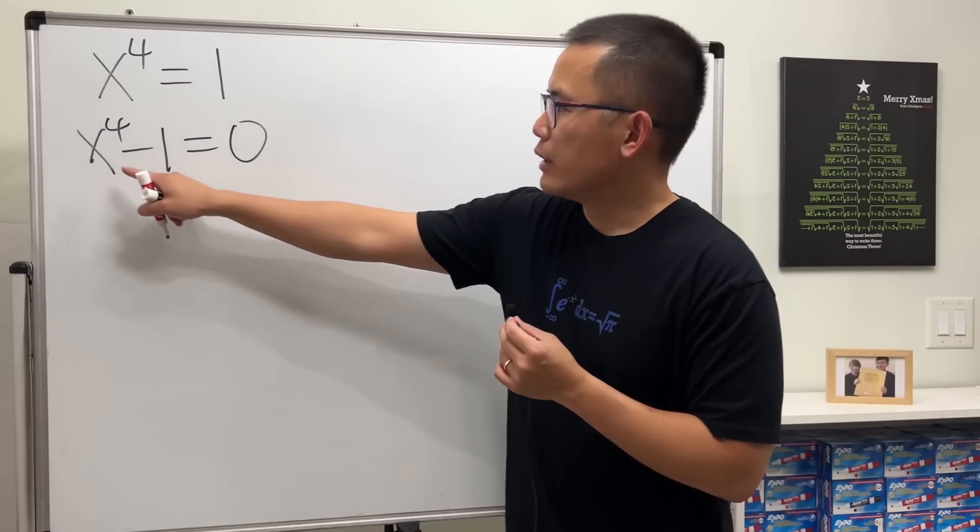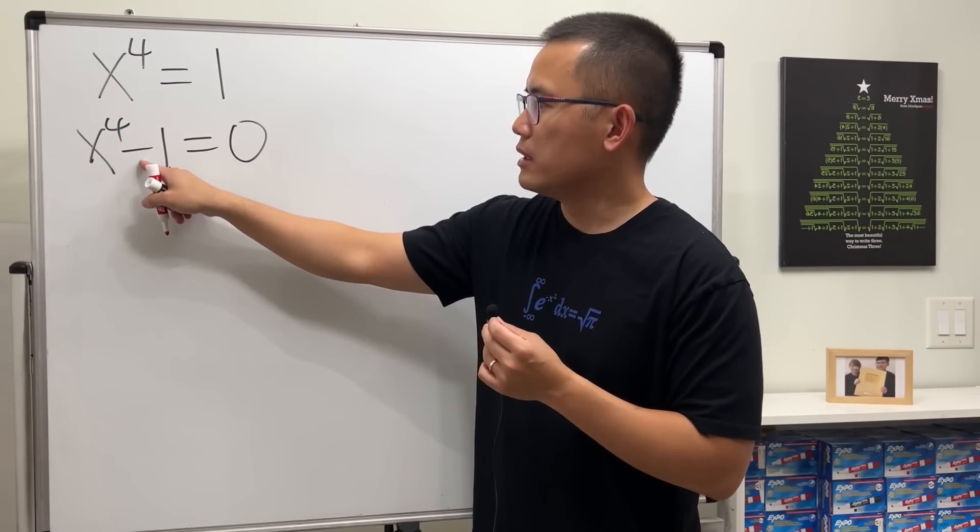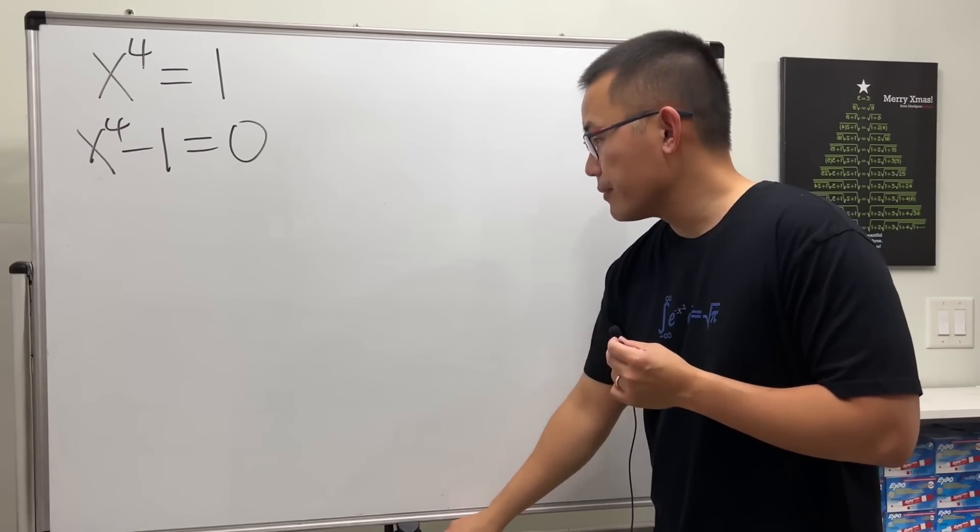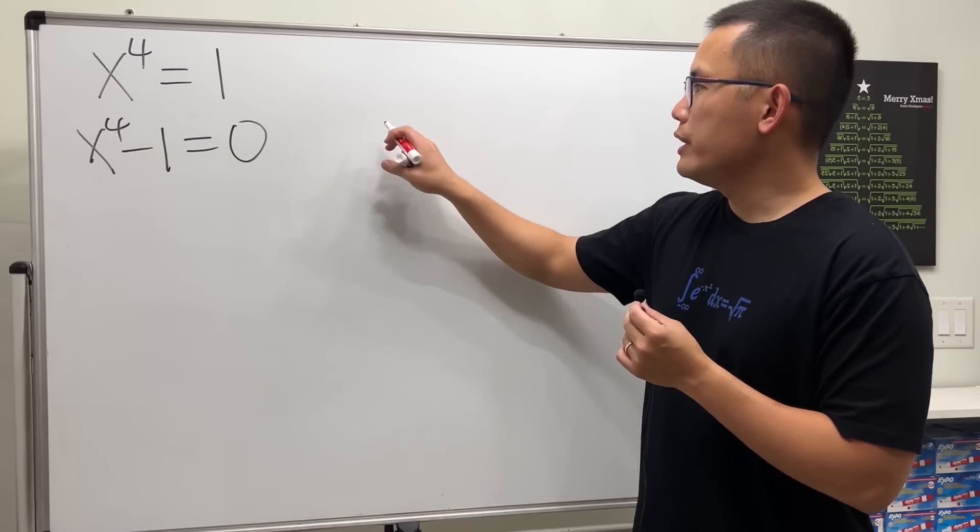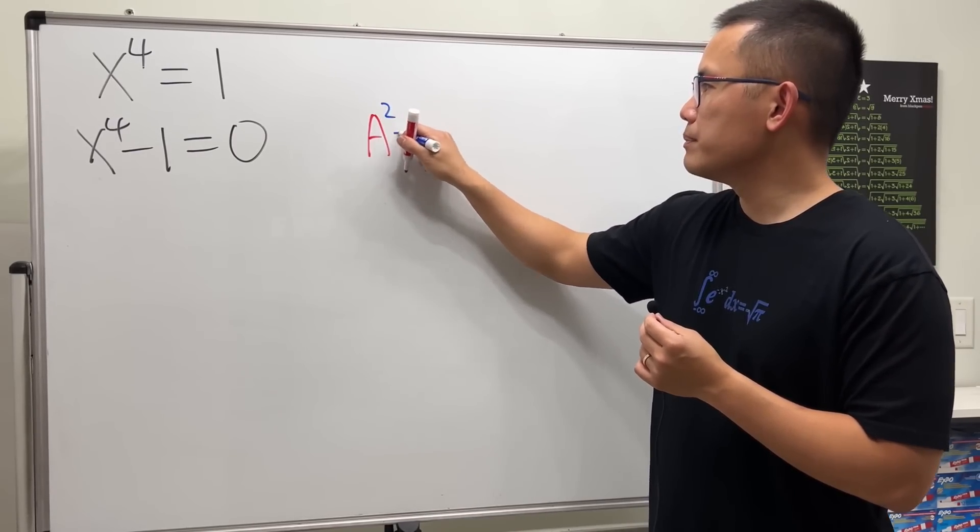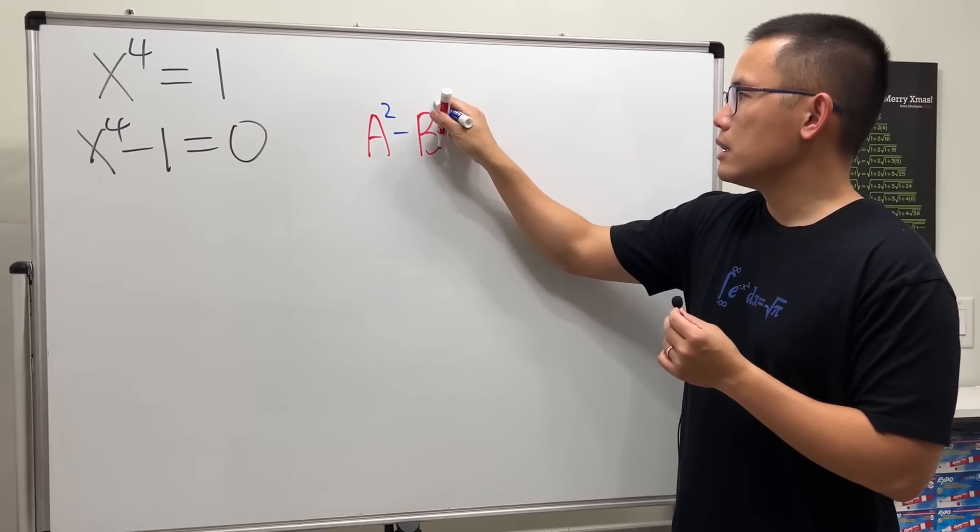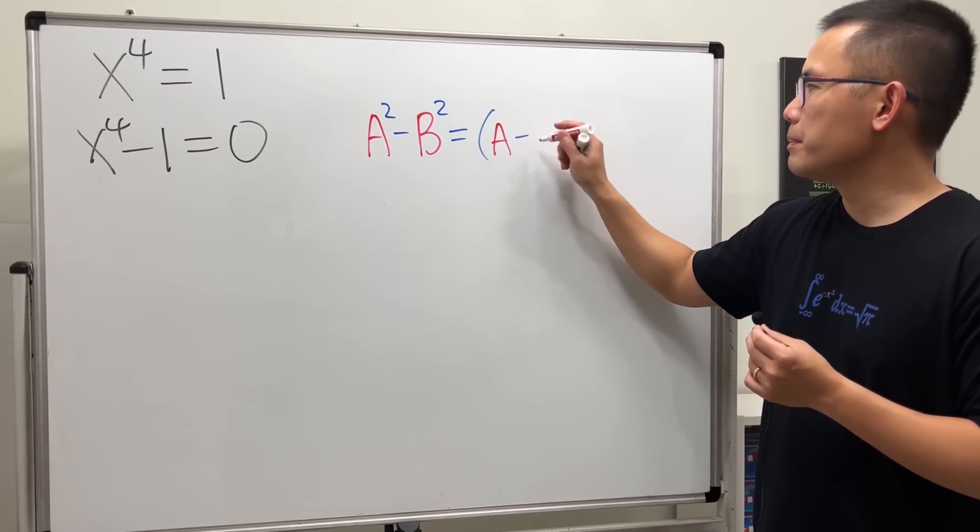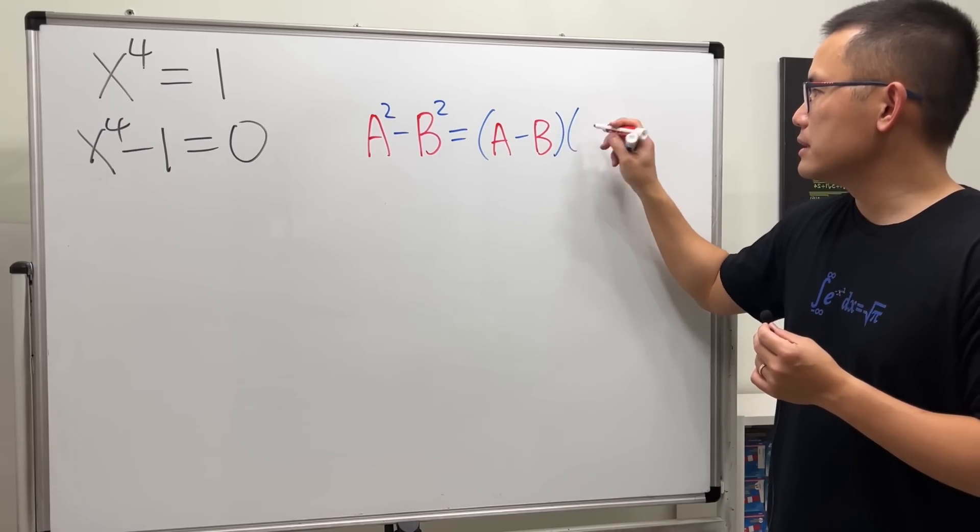To do so, I recognize that this is going to be a difference of two squares. Let me remind you guys on the side. When we have a squared minus b squared, this can be factored as a minus b times a plus b.